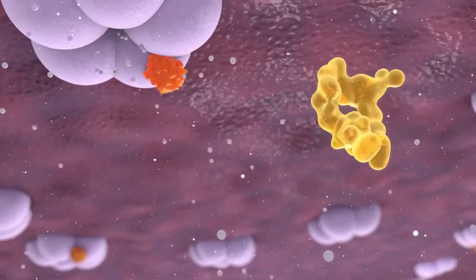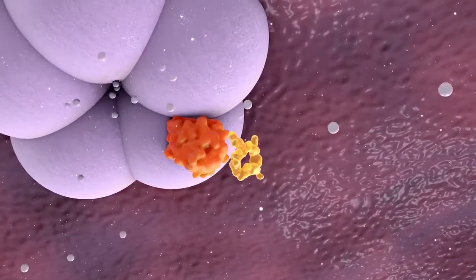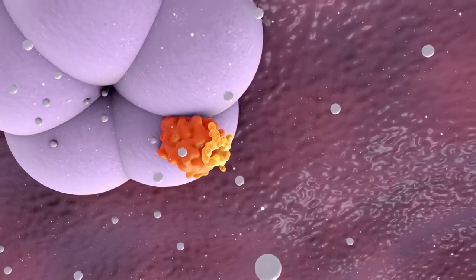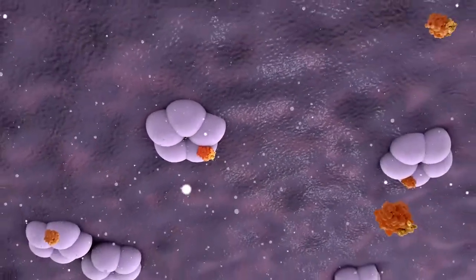For example, CRV431 binds to cyclophilin D which prevents or reverses the formation of pores in the mitochondrial membrane that cause mitochondria to rupture.